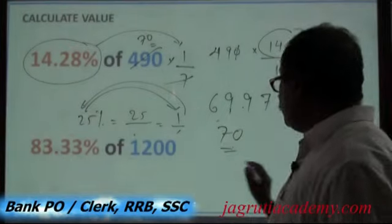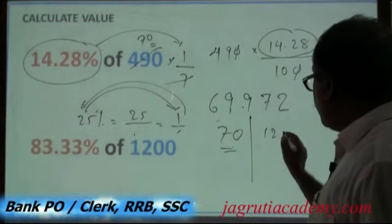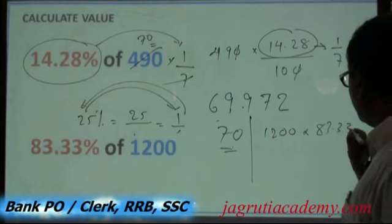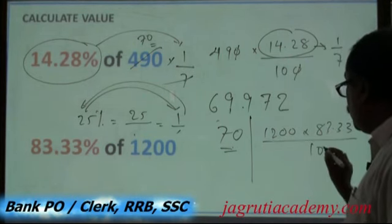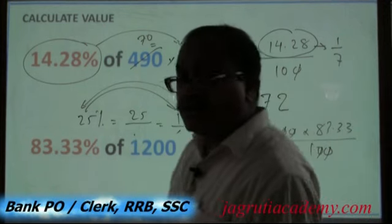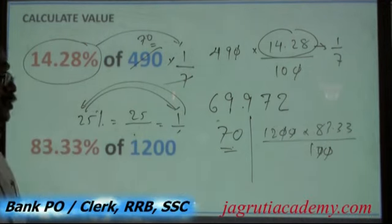How should I write this one? This is 1200 into 83.33 by 100 and these zeros get cancelled. Again the calculation is involved.